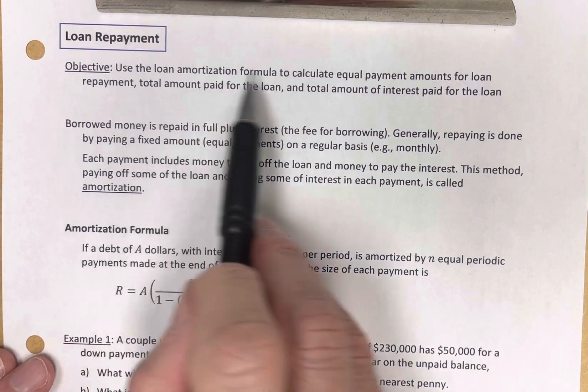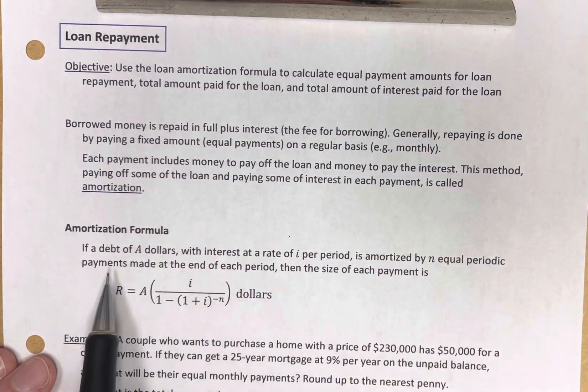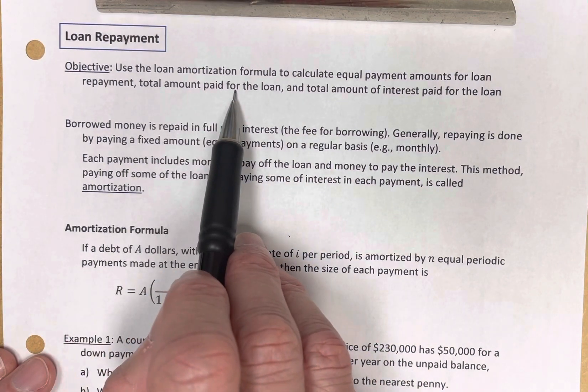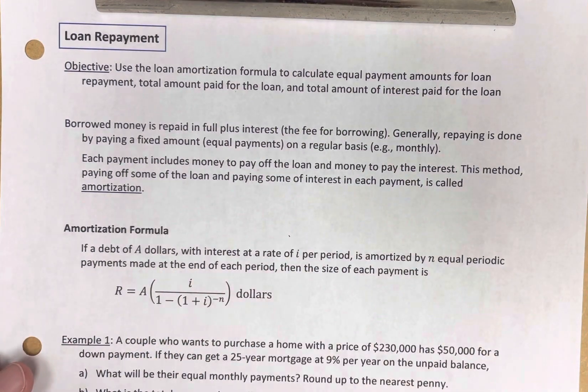So we're going to use the formula to come up with the equal payments, and then we'll calculate also how much we paid for the loan and how much of interest we paid for the loan.